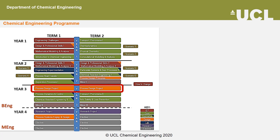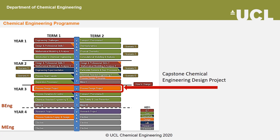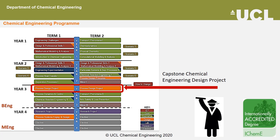The Capstone Design Project takes place in the third year of the Chemical Engineering Program and it gives you the opportunity to apply the knowledge you are gaining throughout your studies to a project to design a chemical plant. Completion of the design project is one of the requirements of an iChemE accredited degree, and this module contributes to fulfilling this requirement for UCL's Chemical Engineering degrees, which are accredited by the iChemE.